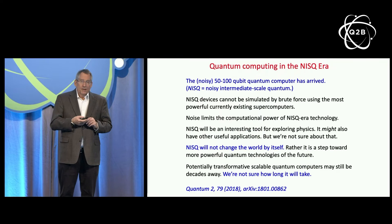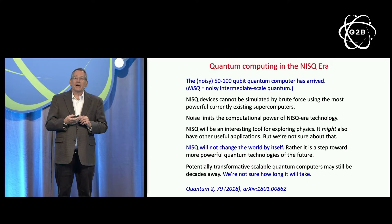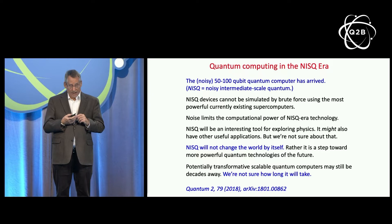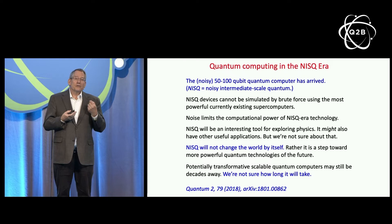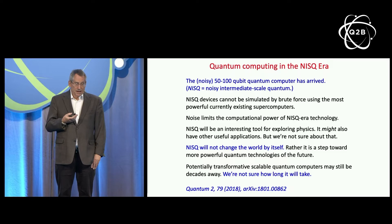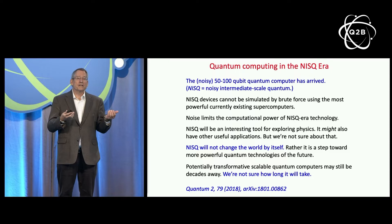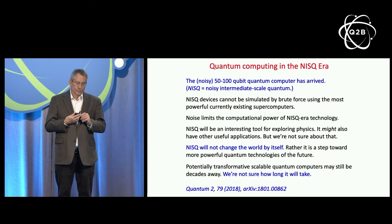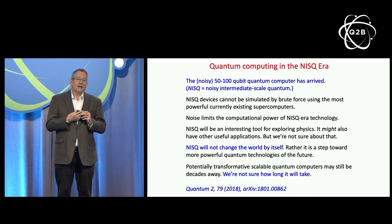We've entered the NISQ era — the era of noisy intermediate scale quantum devices. Intermediate scale means these are now large enough that we can't by brute force easily simulate what the quantum computer is doing, even with a powerful classical supercomputer. Noisy emphasizes that these devices aren't error corrected and the noise limits their computational power. For physicists, NISQ is an exciting advance — a new tool for exploring highly entangled systems in a regime never experimentally accessible before. It may have practical applications, but we shouldn't think of NISQ as something that will change the world by itself. Instead, it's a step toward more powerful quantum technologies. I think we can be confident that quantum technology will have a transformative impact eventually, but we're not sure how long that will take.